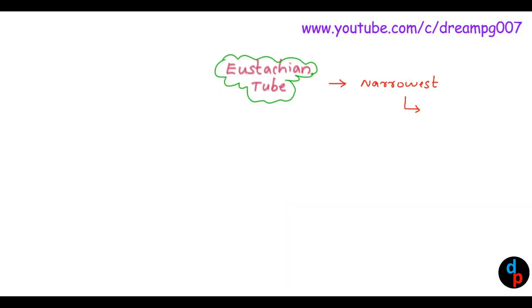Narrowest portion of the Eustachian tube is isthmus. Isthmus is located at the junction of bony and cartilaginous part of the Eustachian tube. Eustachian tube is not a straight one. There is an angle between the bony and cartilaginous part. The normal angle is about 45 degrees.